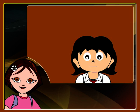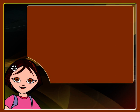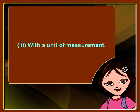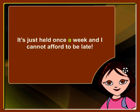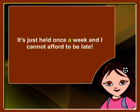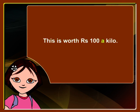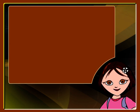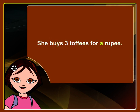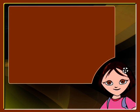Rohini says: 'I'll see you then. I have to run for my debating class. It is just held once a week and I cannot afford to be late.' The indefinite article A has been used before the unit of measurement 'week.' See how it works in these examples as well: 'This is worth rupees 100 a kilo.' 'I brush twice a day.' 'She buys three toffees for a rupee.' An indefinite article A has been used before the unit of measurement in all these sentences.